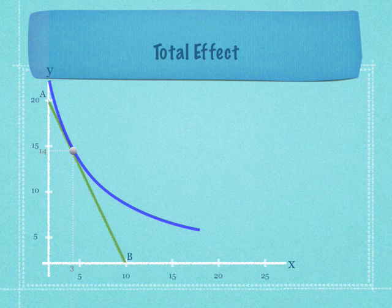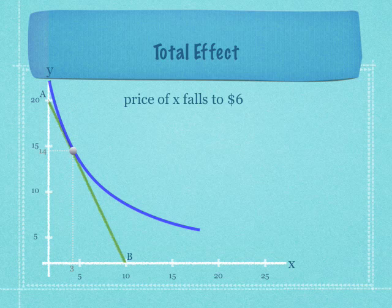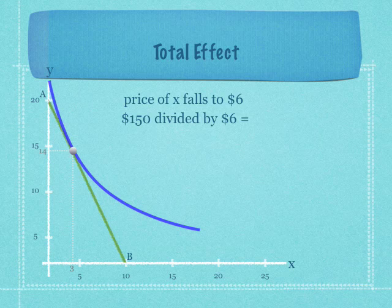Now, the total effect. If price of X falls, we're going to look at that first. So let's say price of X falls to $6. That means that the budget line will shift out. So we take $150 divided by 6, which is equal to 25. So the bottom where point B is, is going to shift out to 25.